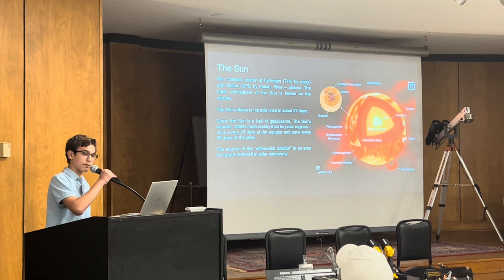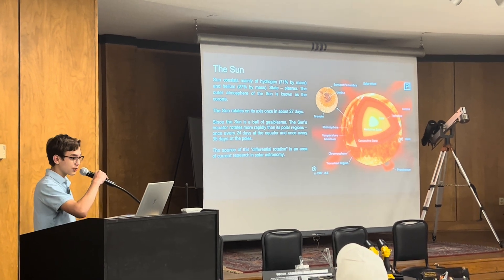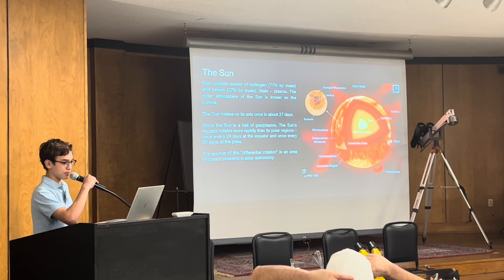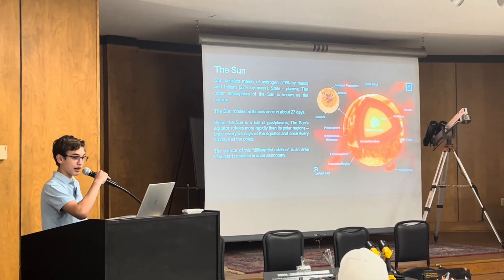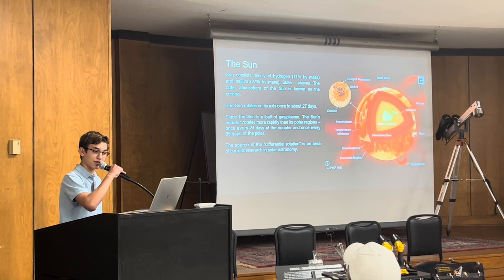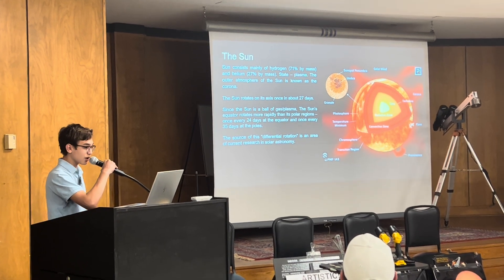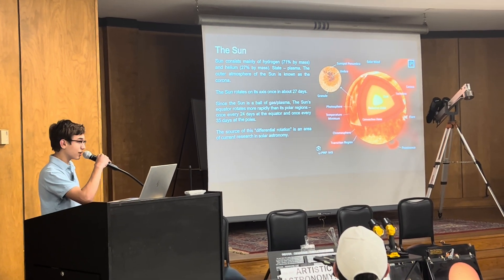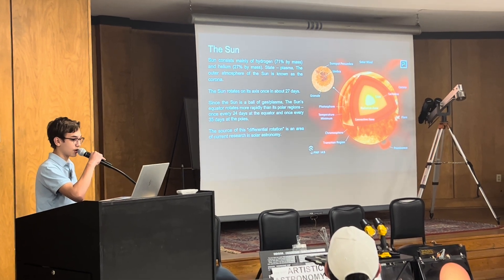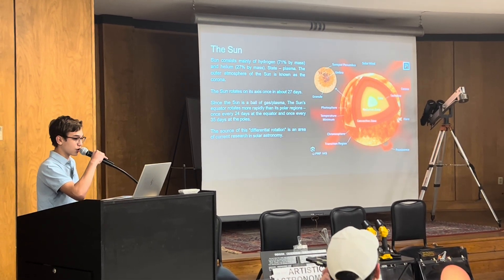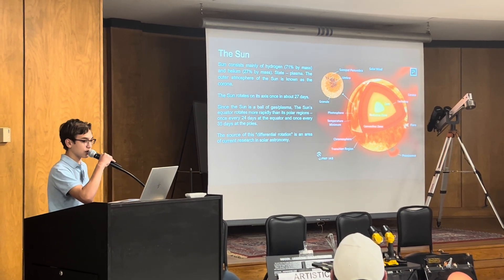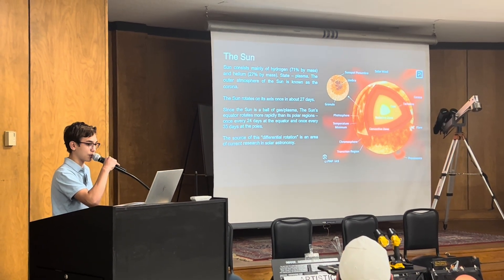Astrophysicists classify the sun as a star of average size, temperature, and brightness. Due to the very high temperatures found in the sun, these elements exist not in the gaseous state but as plasma. Such elements include hydrogen and helium. The sun's corona is the outermost part of the sun's atmosphere. The corona is usually hidden by the bright light of the sun's surface, making it difficult to see without using special instruments.